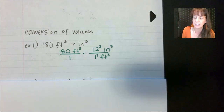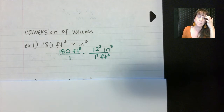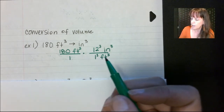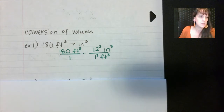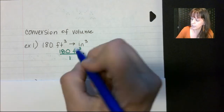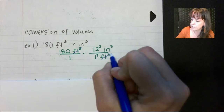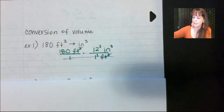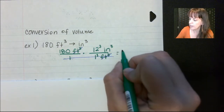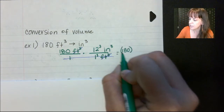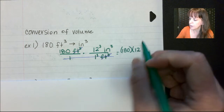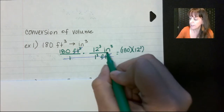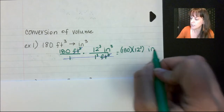Cubing the one leaves it as one. That gets rid of feet cubed — feet cubed downstairs cancels with feet cubed, giving us one times one equals one on the bottom, which goes away. Upstairs we have 180 times 12 to the third power, and the unit remaining is inches cubed. I prefer you leave it in this form so I can see where your math was going.